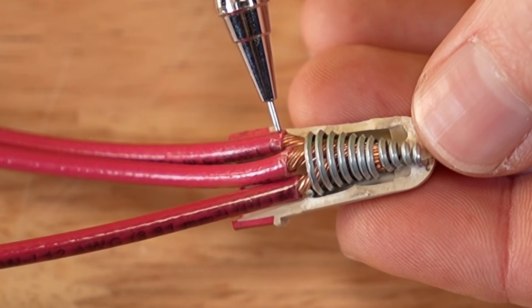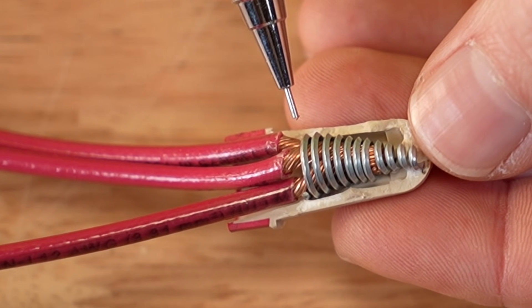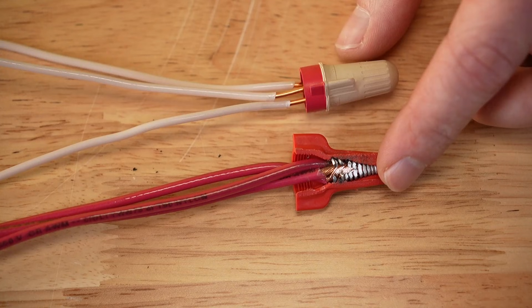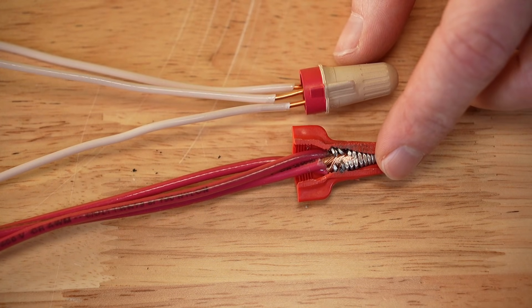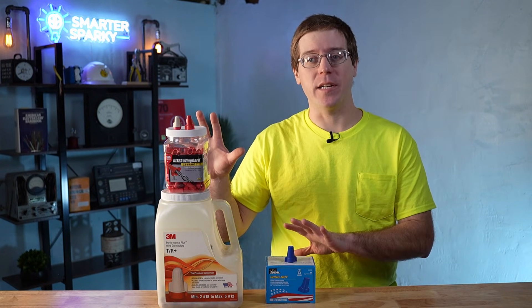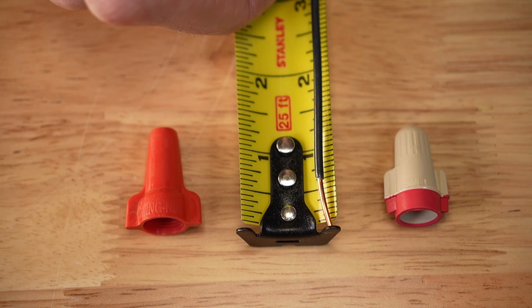Most wire nut problems don't start at the wire nut. They start before it ever goes on. It's crucial to strip the insulation back far enough that the bare conductors come into full contact with the internal spring in the wire nut, but not so far that the bare wire is hanging out past the bottom. No insulation should end up inside the spring, and no copper should be visible outside of the wire nut. Strip length varies depending on the size of the wire nut. For these mid-range wire nuts, about 5 eighths of an inch is the sweet spot.